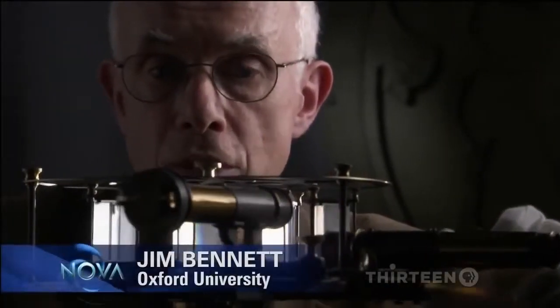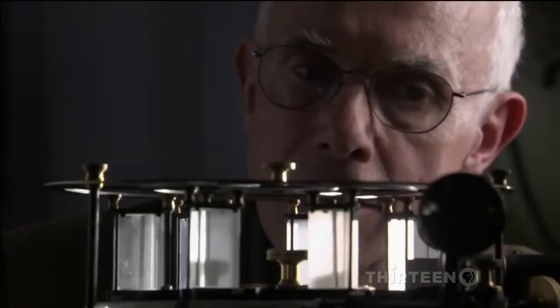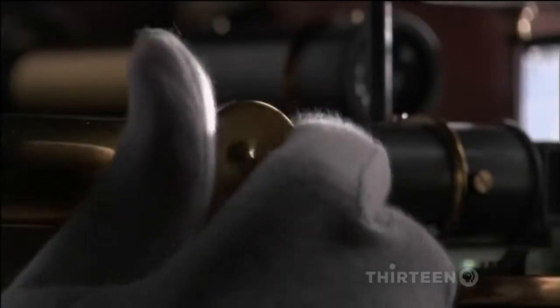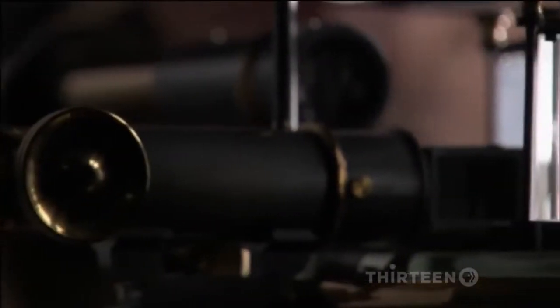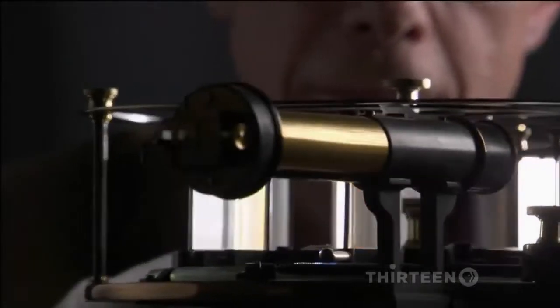He uses a method first discovered in the 1800s. This is a spectroscope made in about 1880, one of the first generation of instruments used for analyzing the light from the sun. It's an instrument like this that transformed astronomy because you can decode the light in a way that you'd never imagine. The spectroscope splits white light into its rainbow spectrum of colors. And hidden in this spectrum are clues to the behavior of the stars.